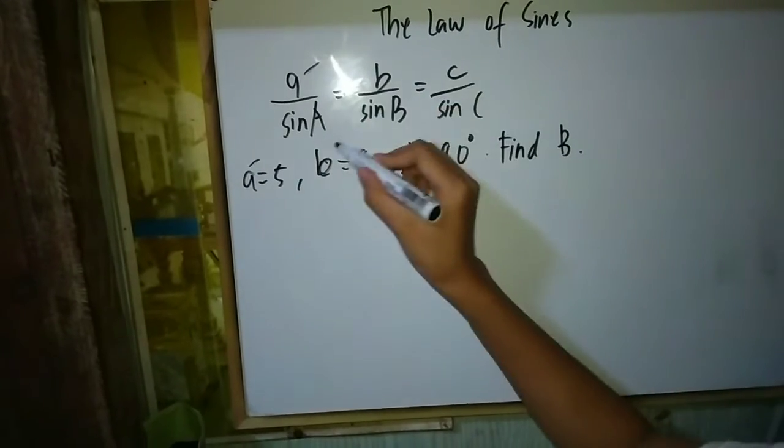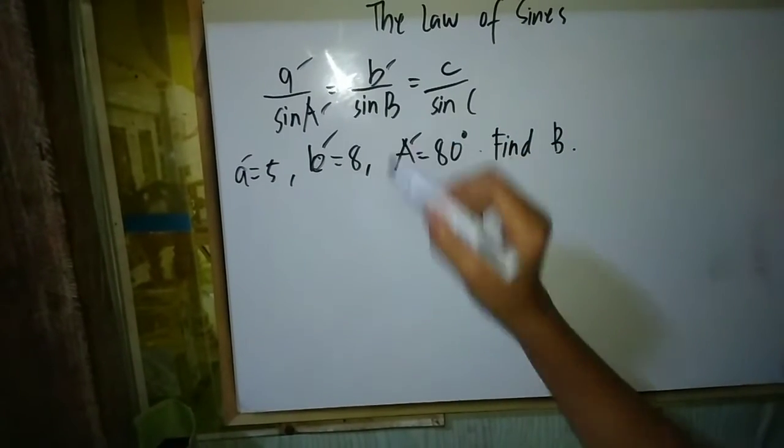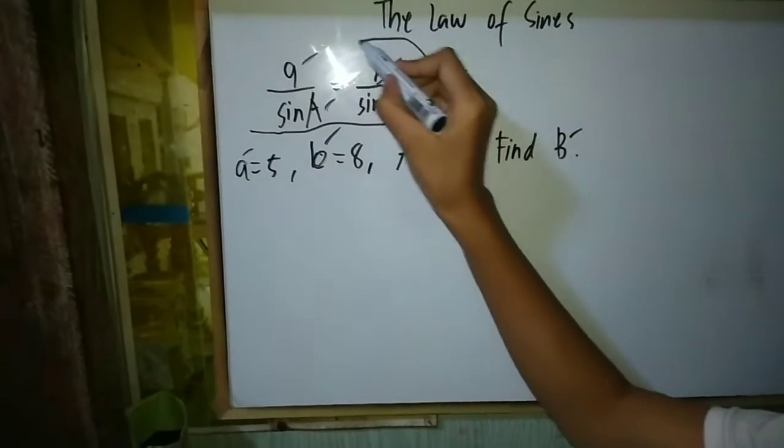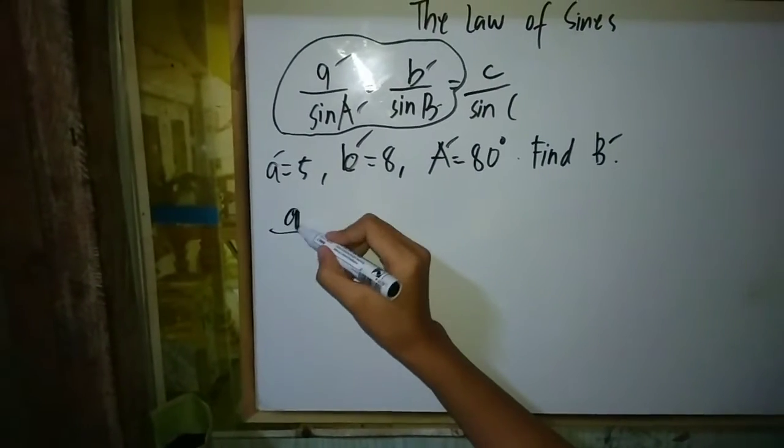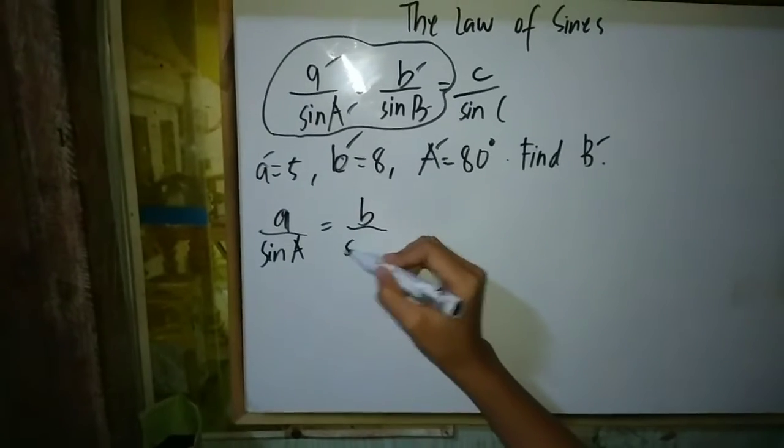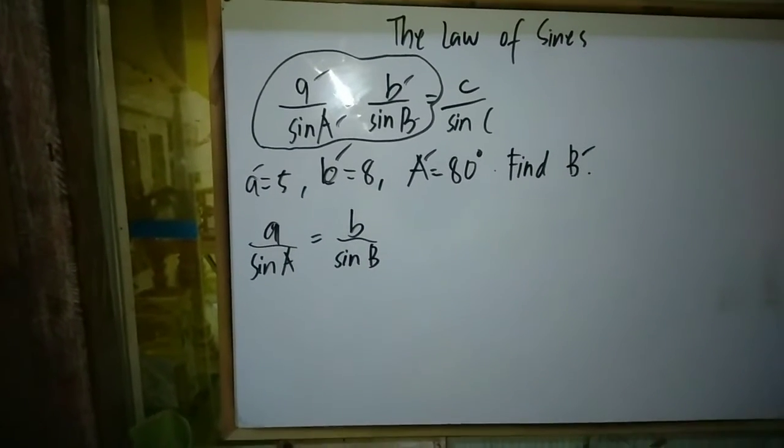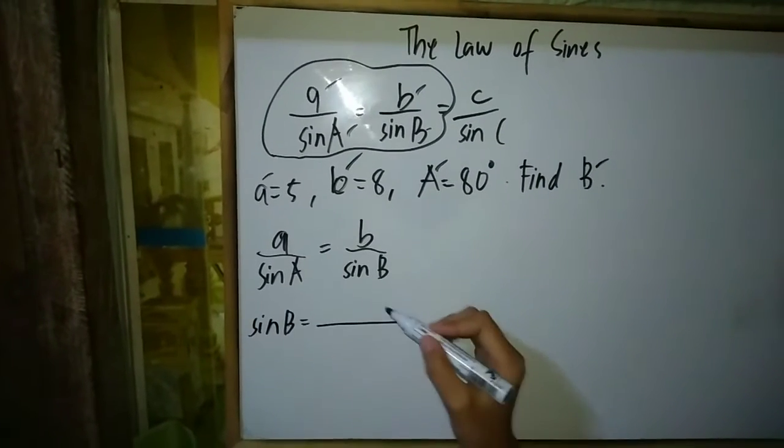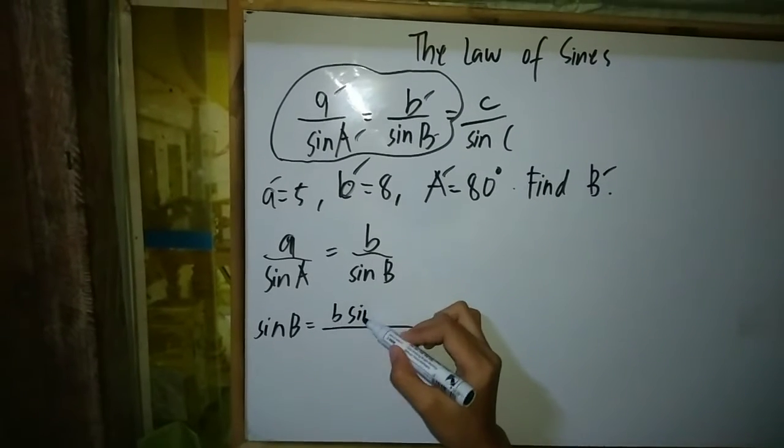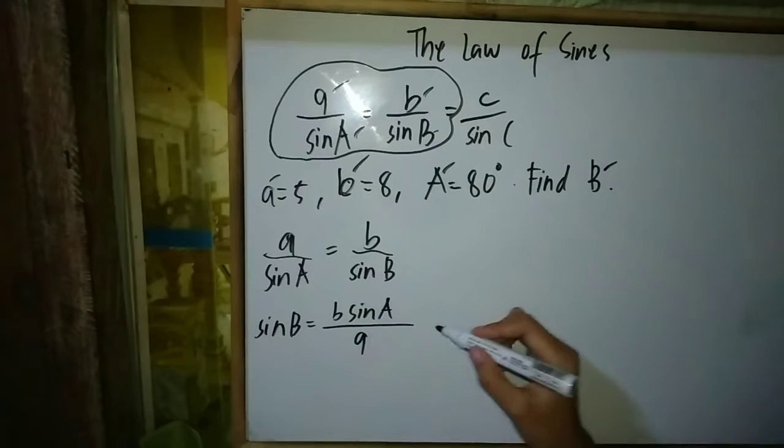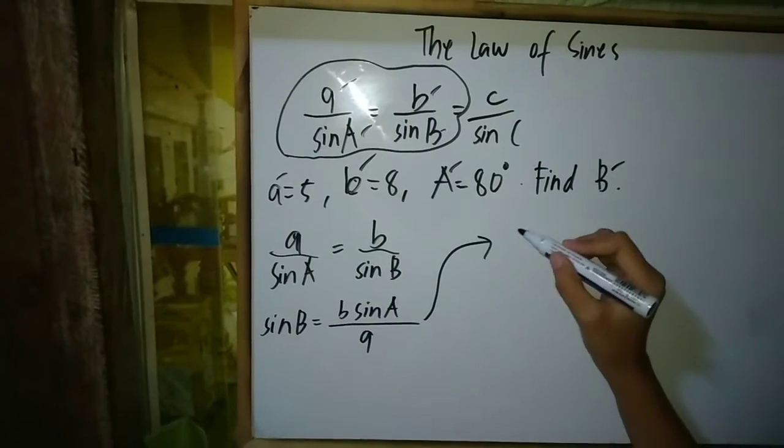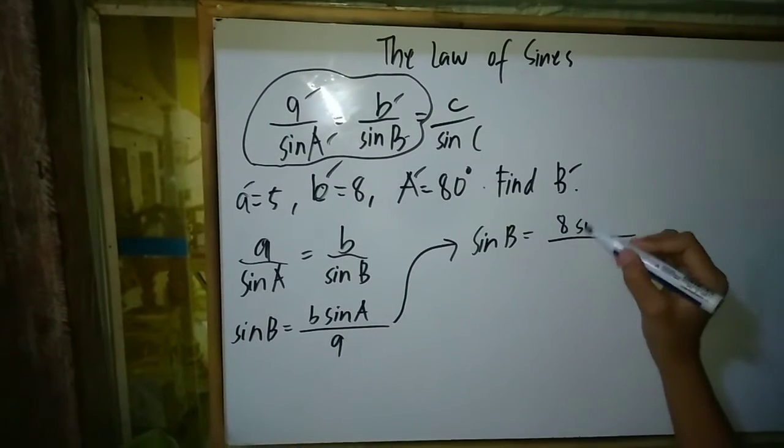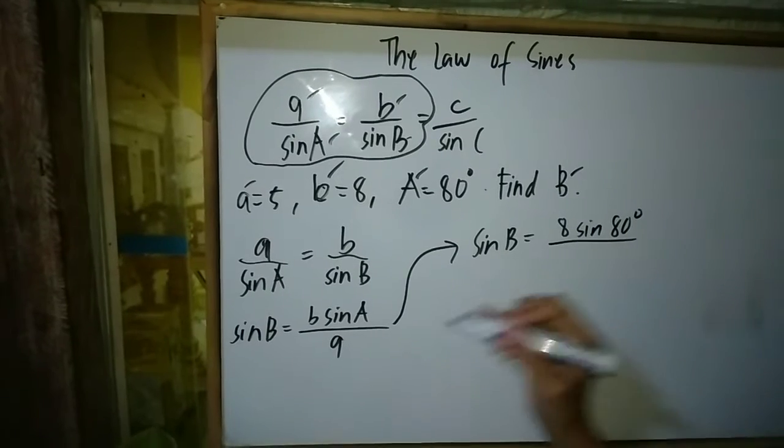So we have our a, we have our b, we have our angle A, and we will find angle B. So it is easy for us to determine what formula we will use: a over sin A equals b over sin B. We will find sin B, so sin B is equal to b times sin A over a. We will substitute the values, so sin B equals b, which is 8, times sin A, which is 80 degrees, and our a is 5.